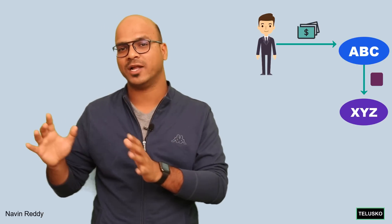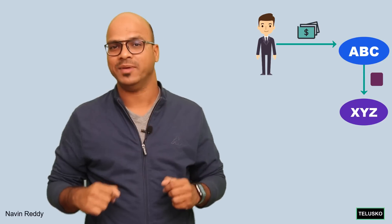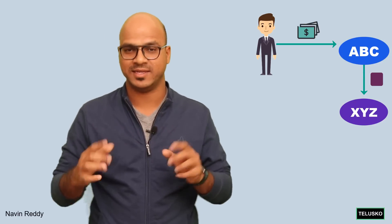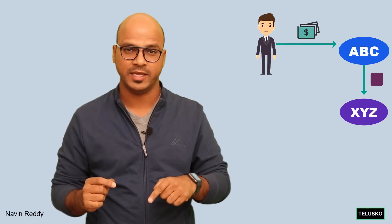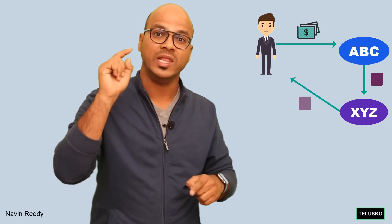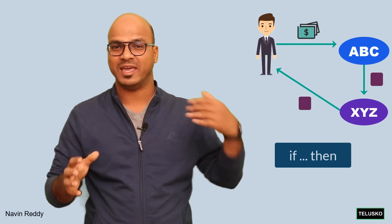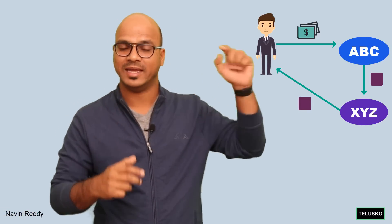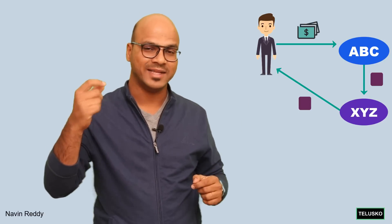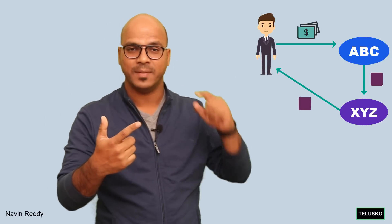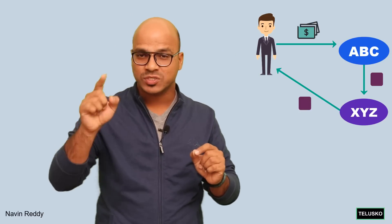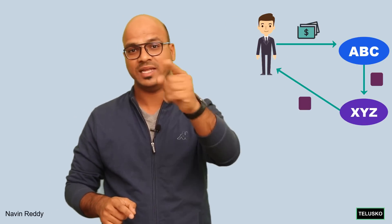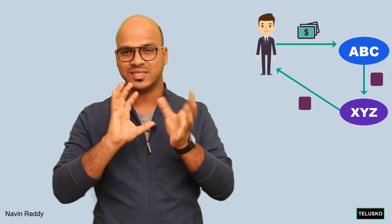To solve that problem we can use smart contracts. The entire payment system can be automated. I buy something from abc.com prepaid, but ABC does not receive the money until I receive the product — it's like an if-then condition in programming. Similarly, XYZ receives their commission from ABC only when they deliver the product. That's smart contracts.